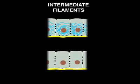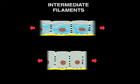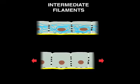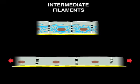These cables of intermediate filaments have a high tensile strength. Without these filaments, stretching or pressure on the epithelial sheet would cause it to rupture.